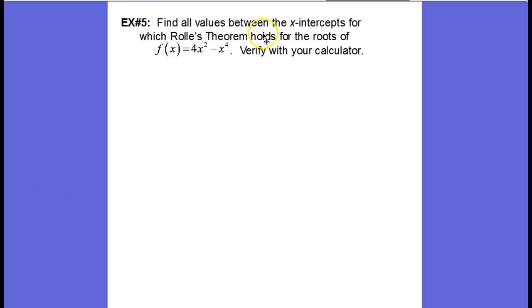So here we want to find all values between the x-intercepts for which Rolle's theorem holds for the roots of f(x) = 4x² - x⁴, and they say we can verify this with our calculator.